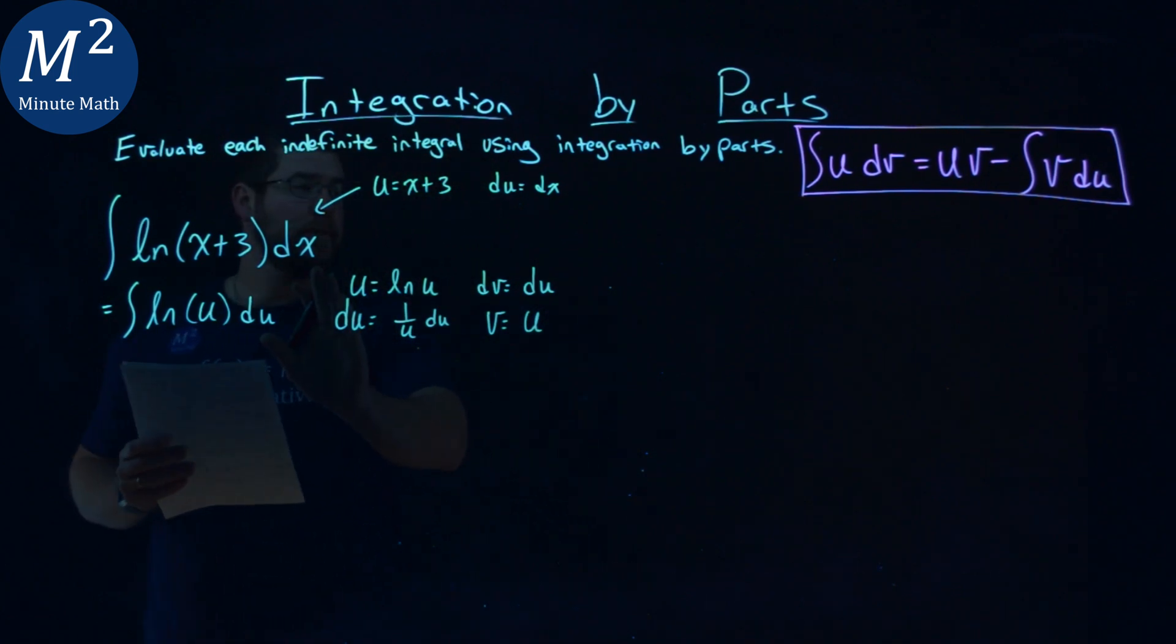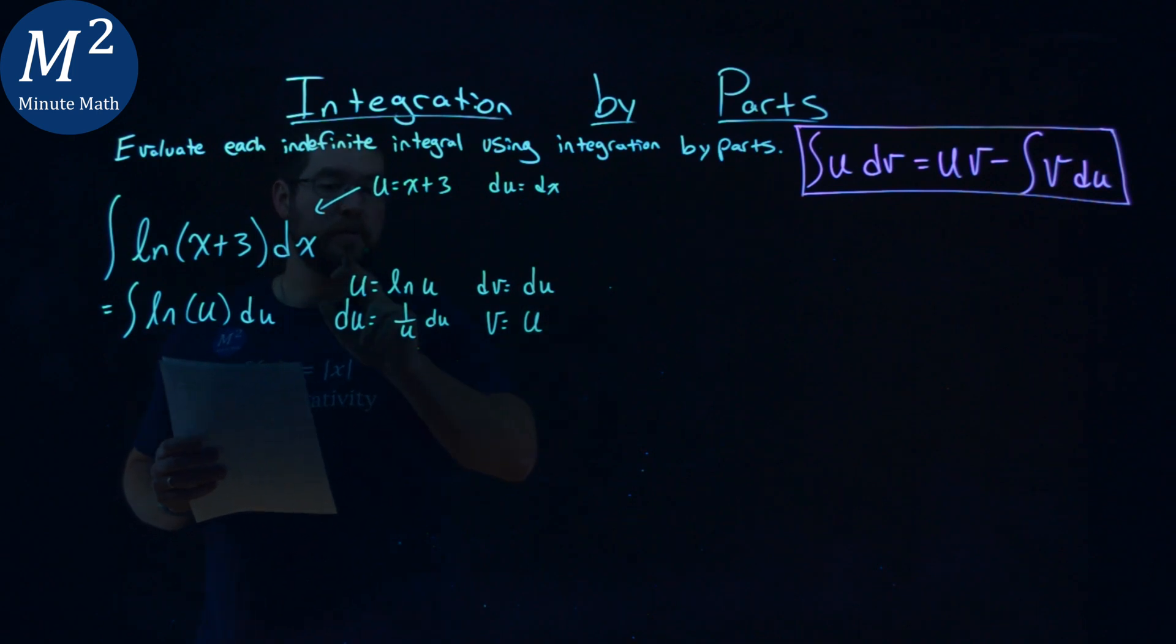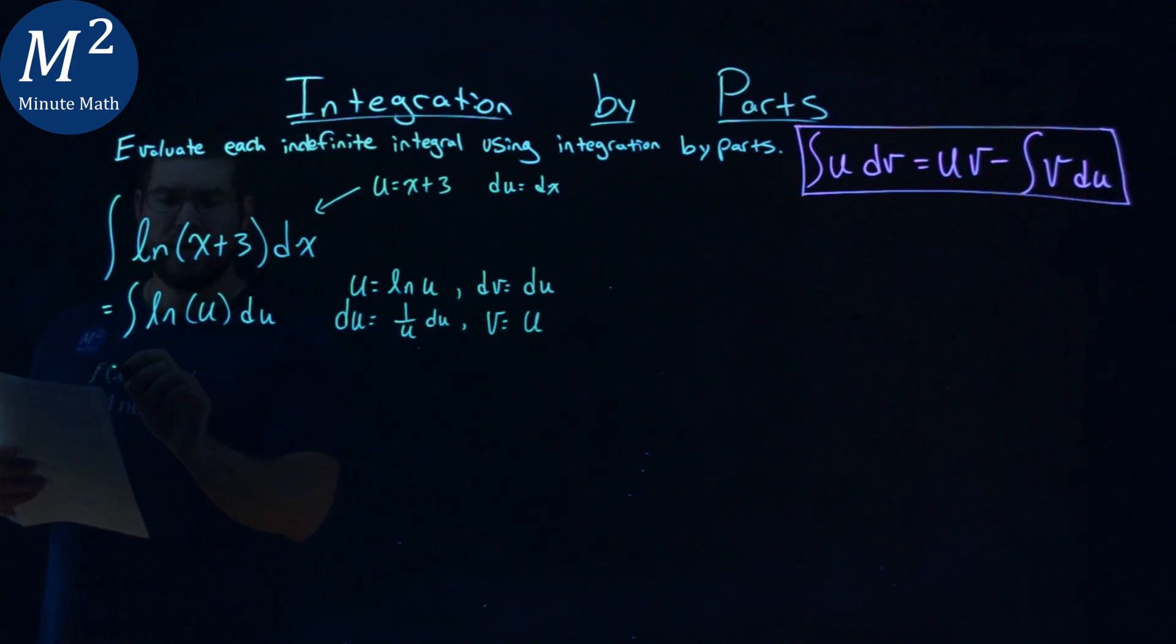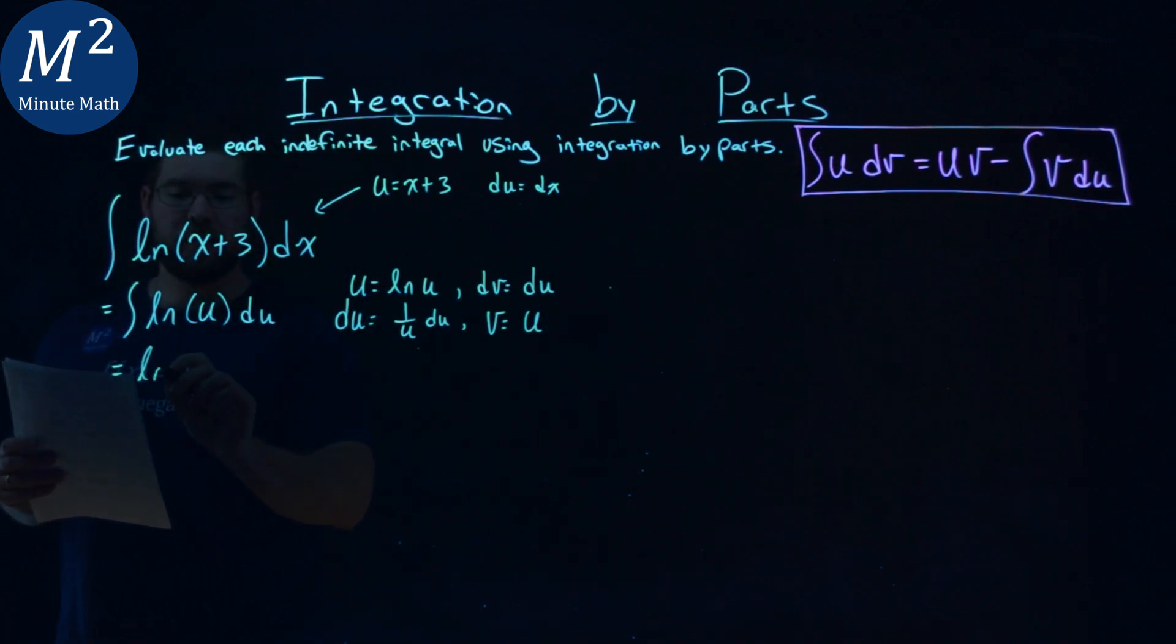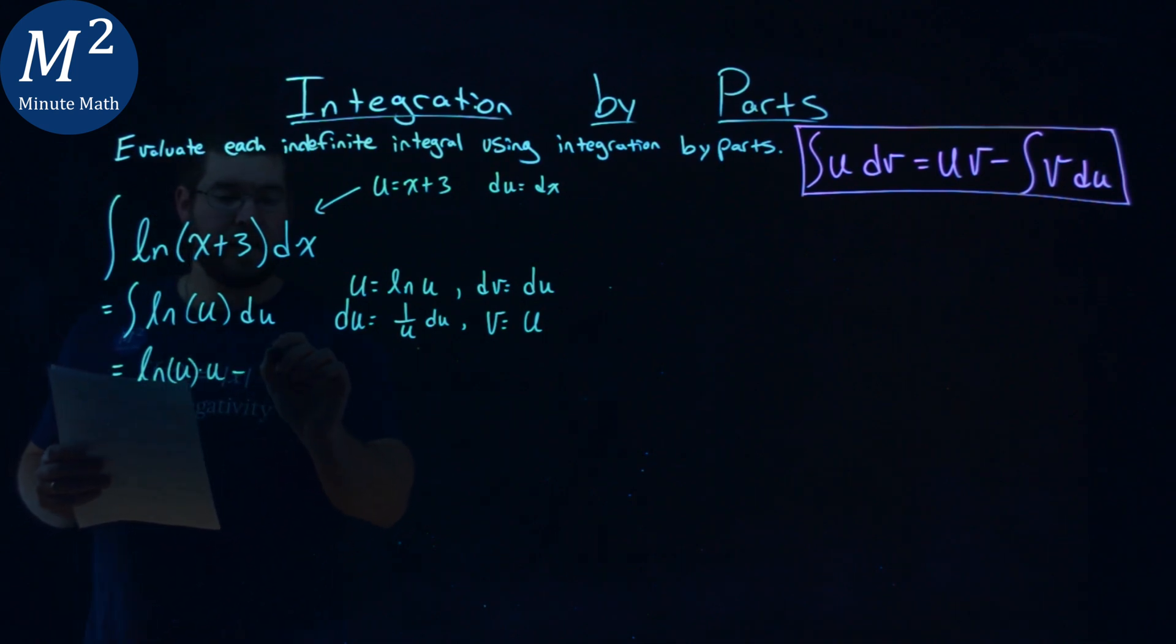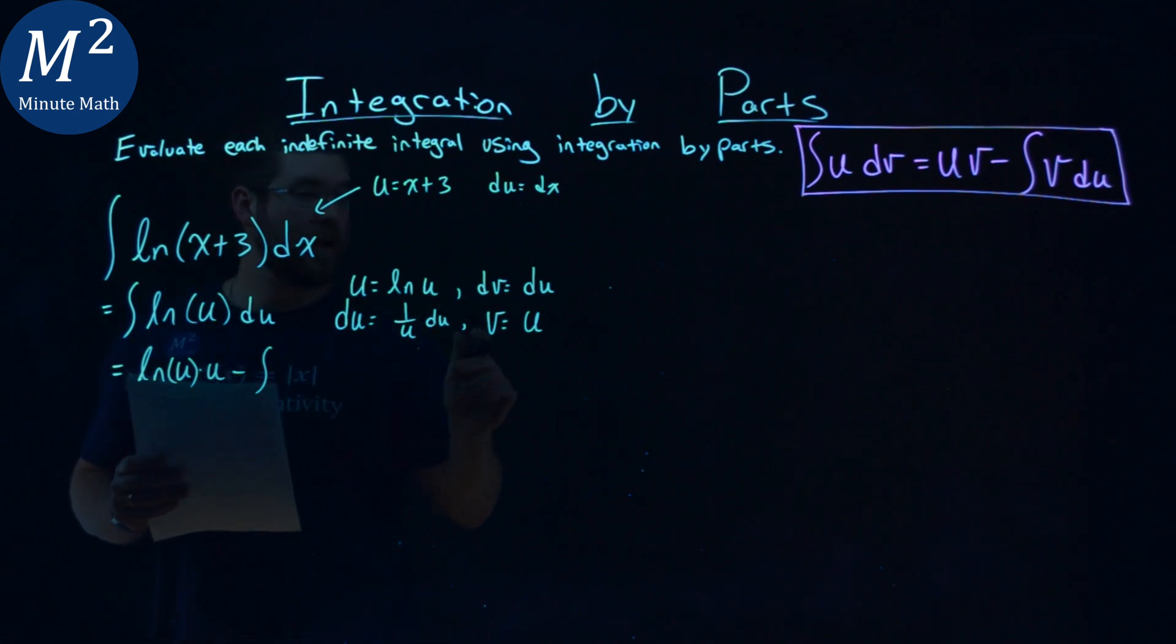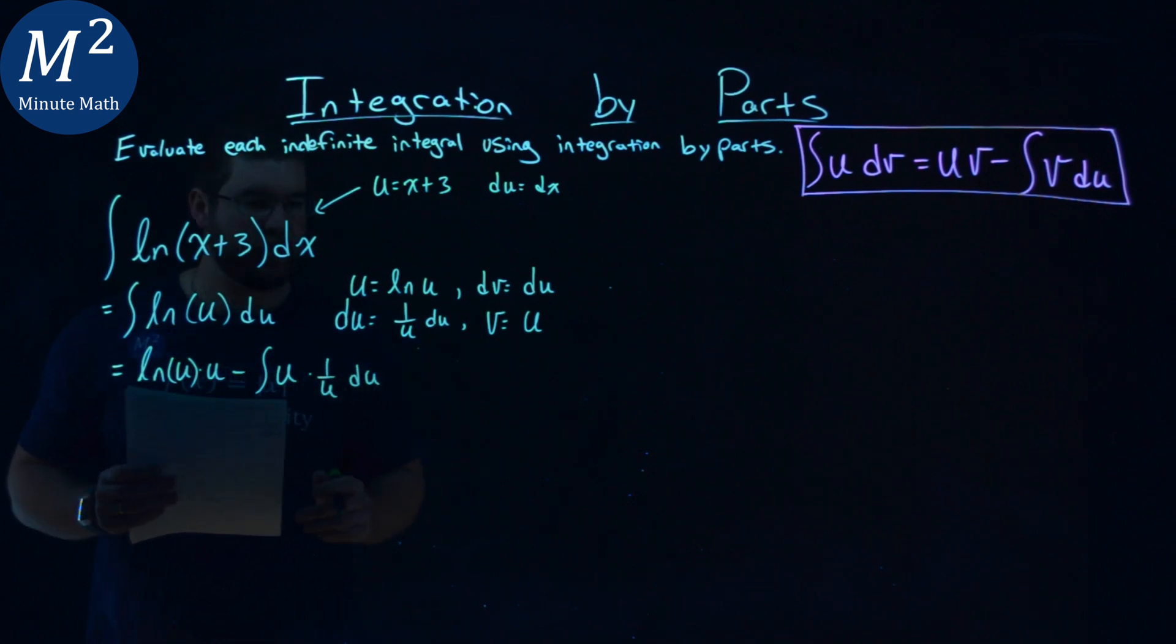So again, apply the formula, and when you think of the letters of the formula, just think of the left-hand side of these equal signs. So take our time here. u times v, u natural log of u. My v value is a u minus the integral of my v value, which is a u, times a du, which is 1 over u du.